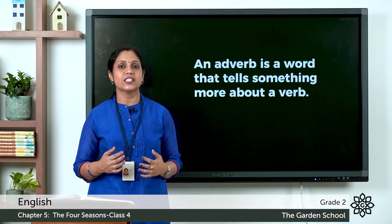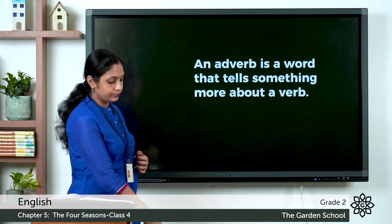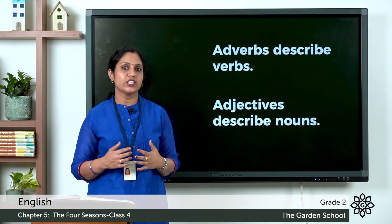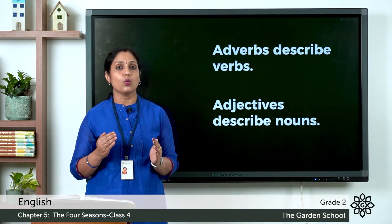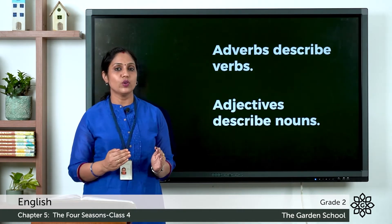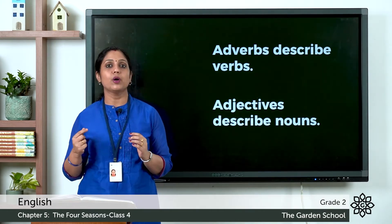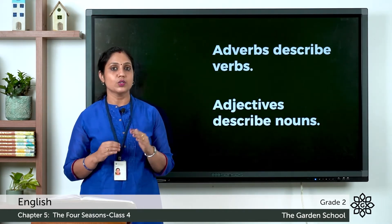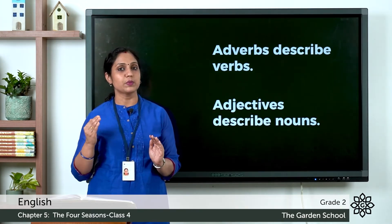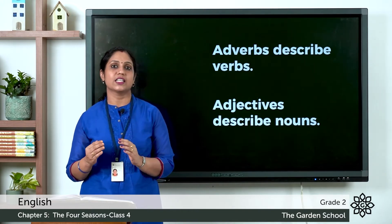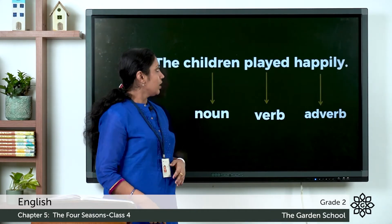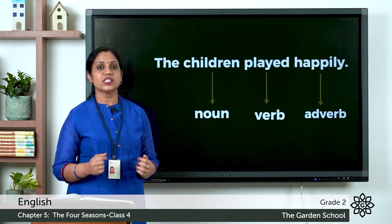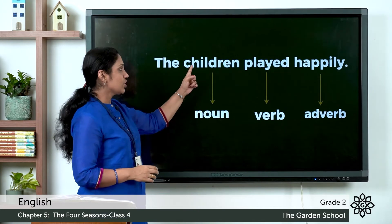We have learned about adjectives in our previous class. Adjectives are words that describe nouns, and adverbs are words that describe verbs. You should not get confused with these two: adverb describes verbs, adjective describes nouns. Now look at this sentence: The children played happily. Which is the noun? The noun is children.